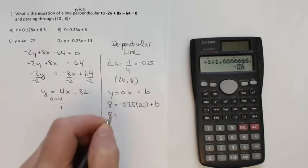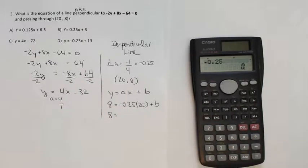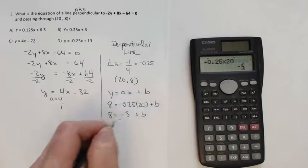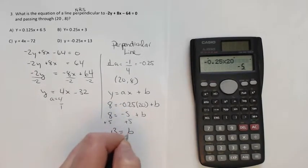8 is equal to negative 0.25 times 20 is equal to negative 5. Add 5 to both sides. 13 is your b.